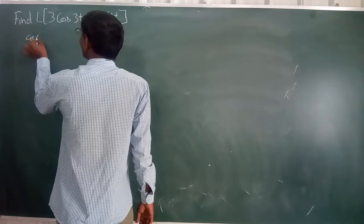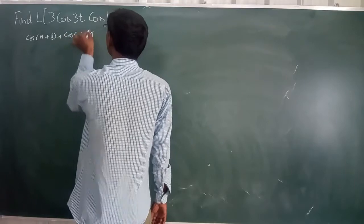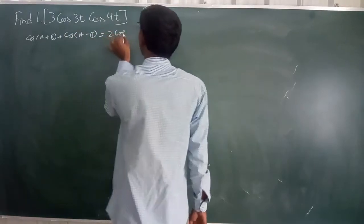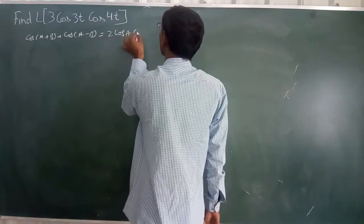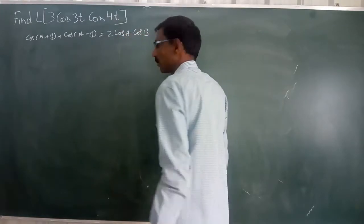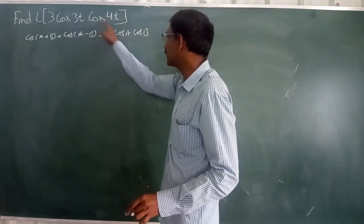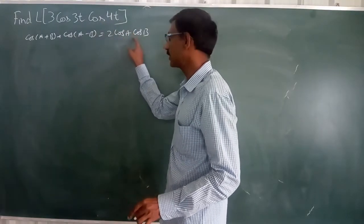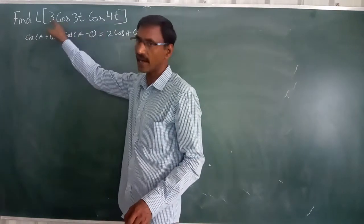Cos A plus B plus cos A minus B is equal to 2 cos A cos B. This is one part. Here this is in the form of like this, except for this. Here we have 2 right, here we have 3 right.